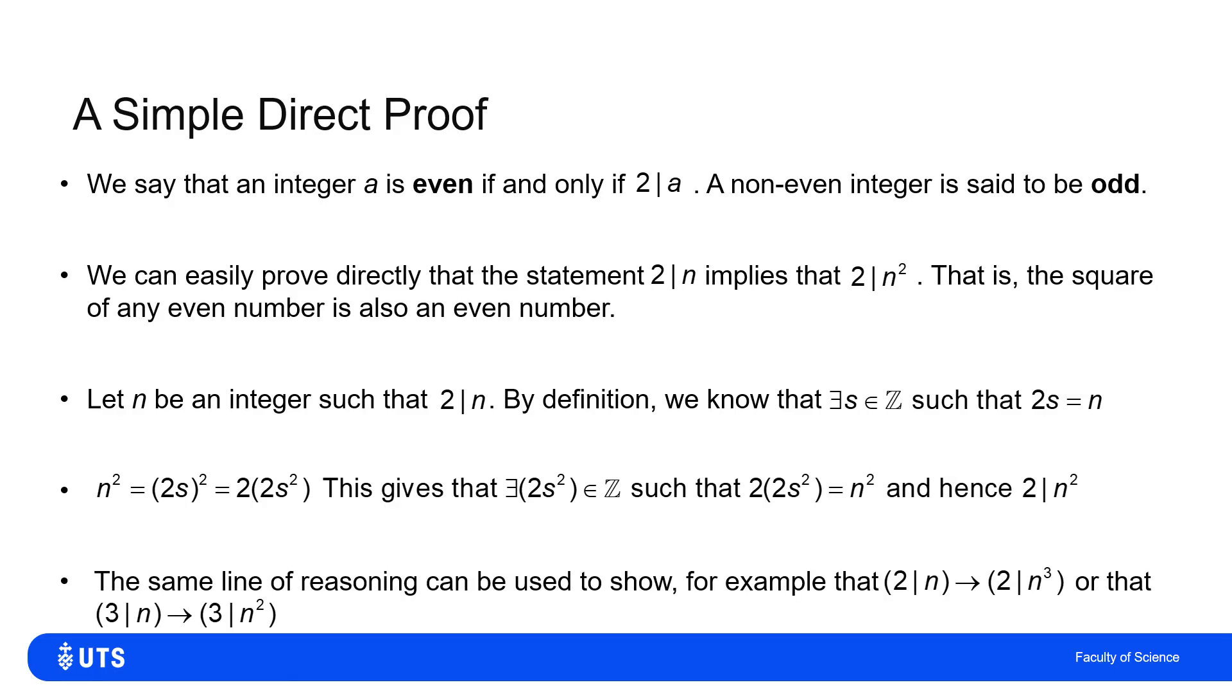Now, although we have the nice linguistic thing of using the phrase odd or even, the same proof actually works for other integers. Instead of saying that two divides n implies that two divides n squared, I can also say that for integers, three divides n implies that three divides n squared and so on.